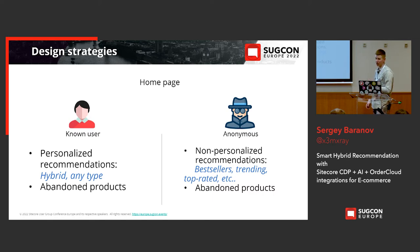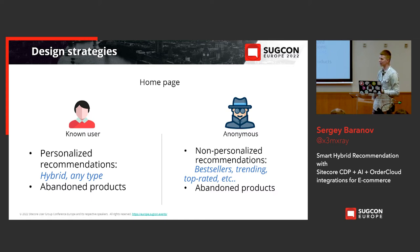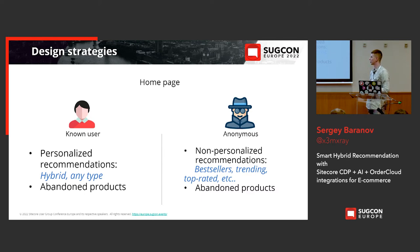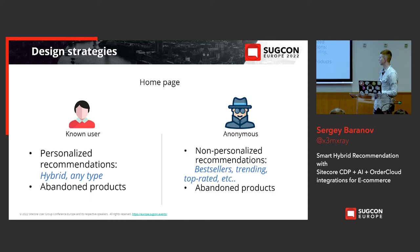The homepage is almost always the first touch point for your shoppers — it's the key for capturing visitor attention and should have relevant recommendations for all types of visitors. For identified users, you can show personalized recommendations — hybrid is the best option. For anonymous users, you can show non-personalized recommendations like bestsellers, trending, or top-rated products. And because the homepage is almost always the first page a user opens, it's a good place to remind them about any abandoned products.